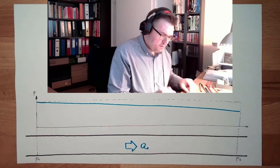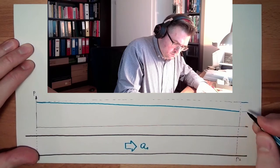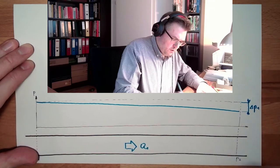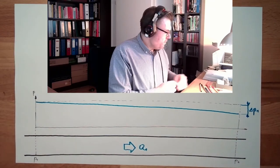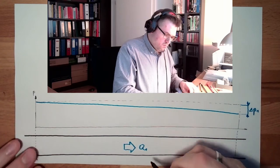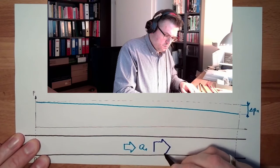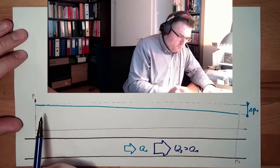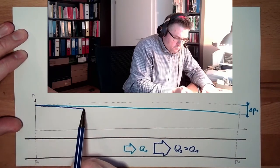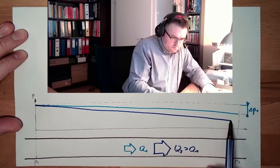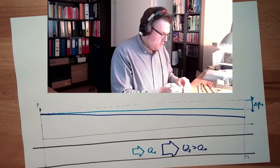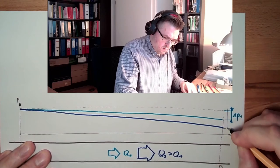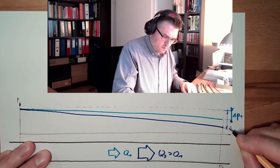Here we have a pressure drop, delta p1, caused by this flow q1. If we do have another flow, bigger flow, q2, bigger than q1, then what happens to the pressure drop? The pressure drop is more severe. Here we have delta pressure two.